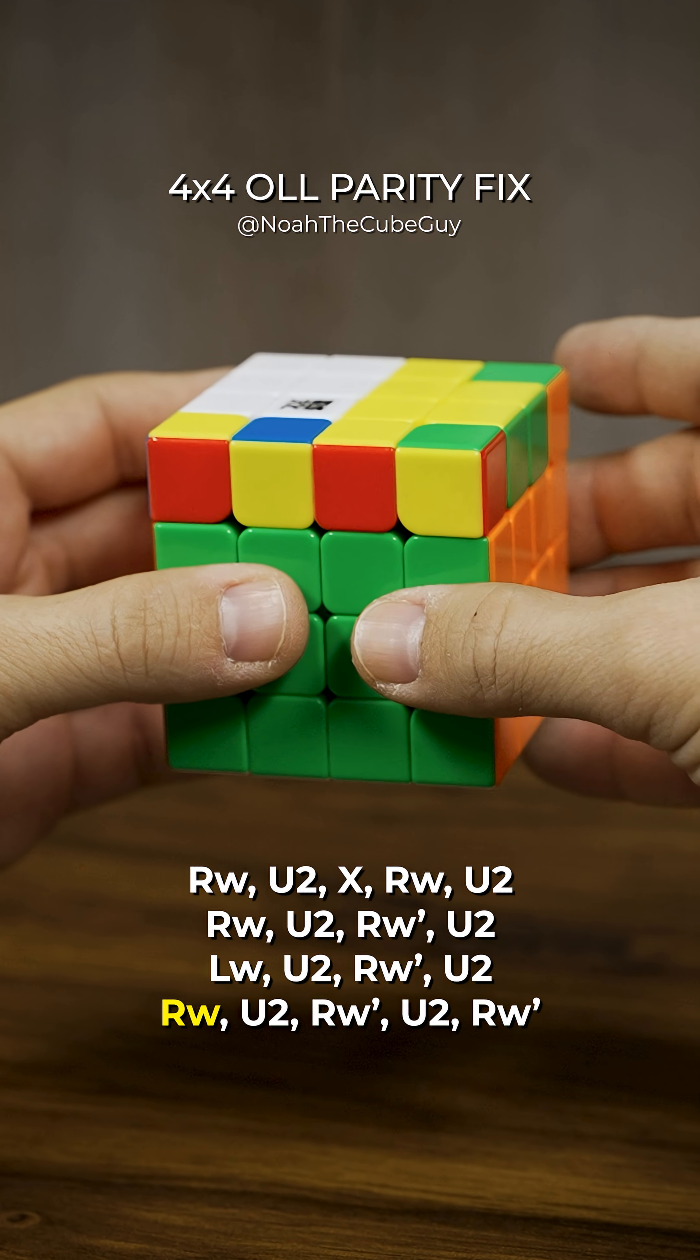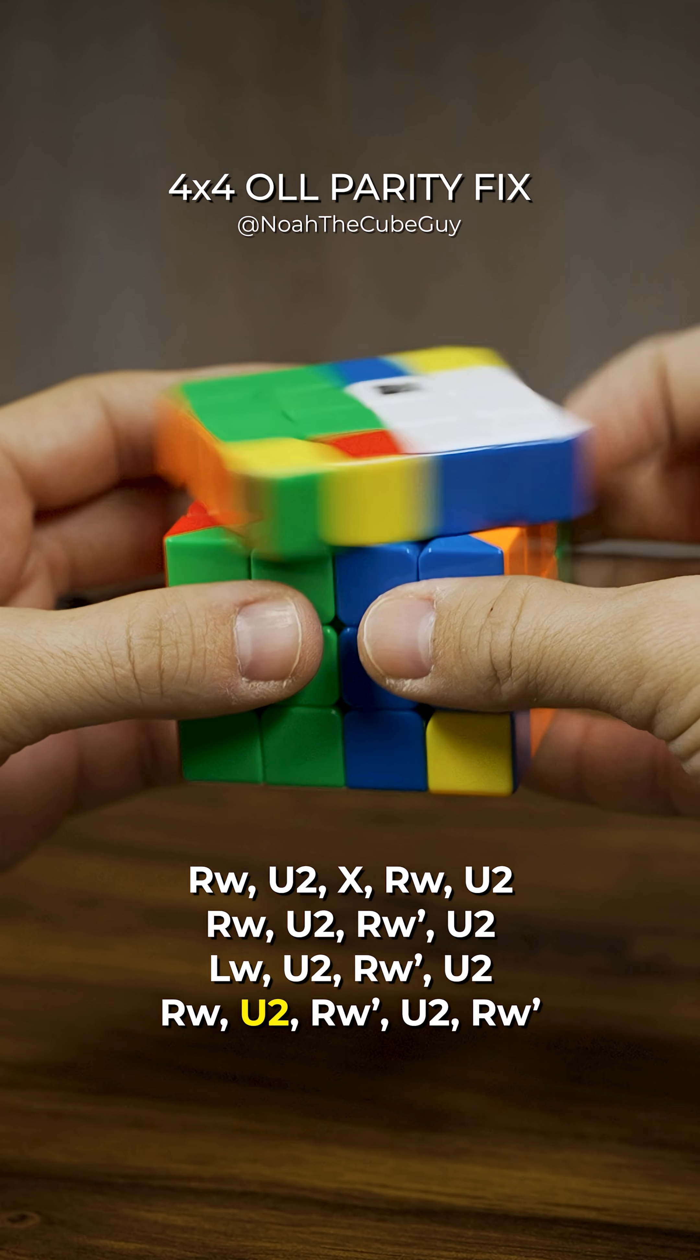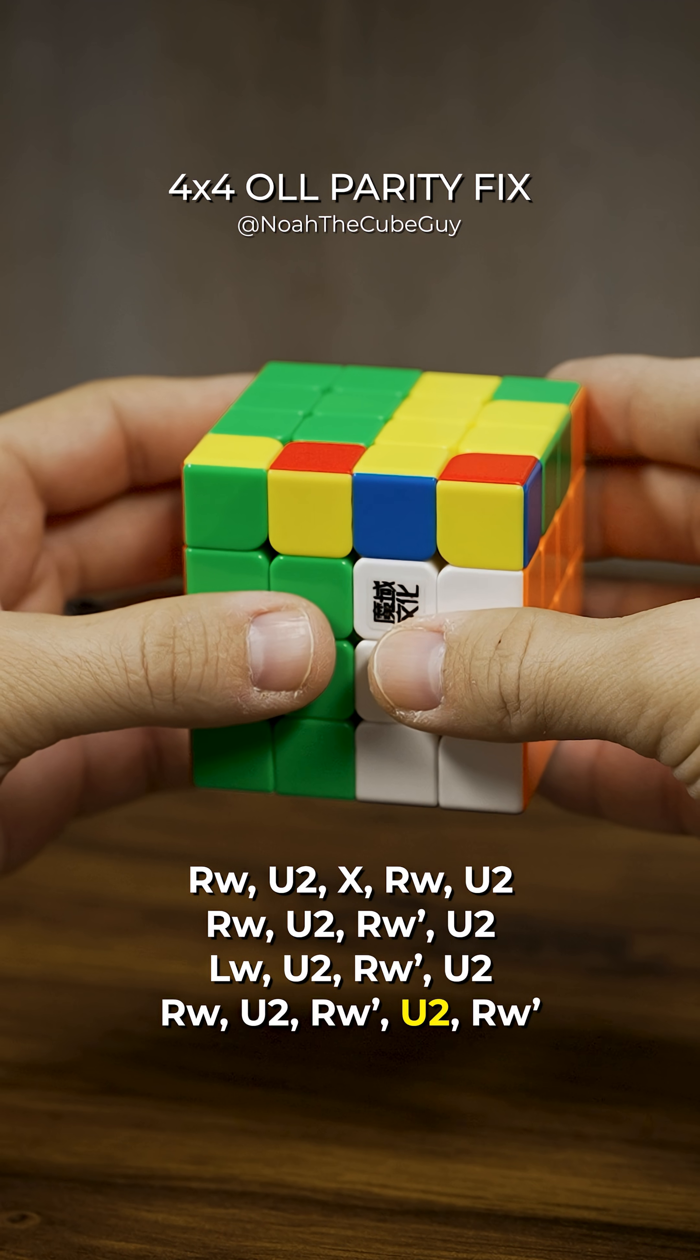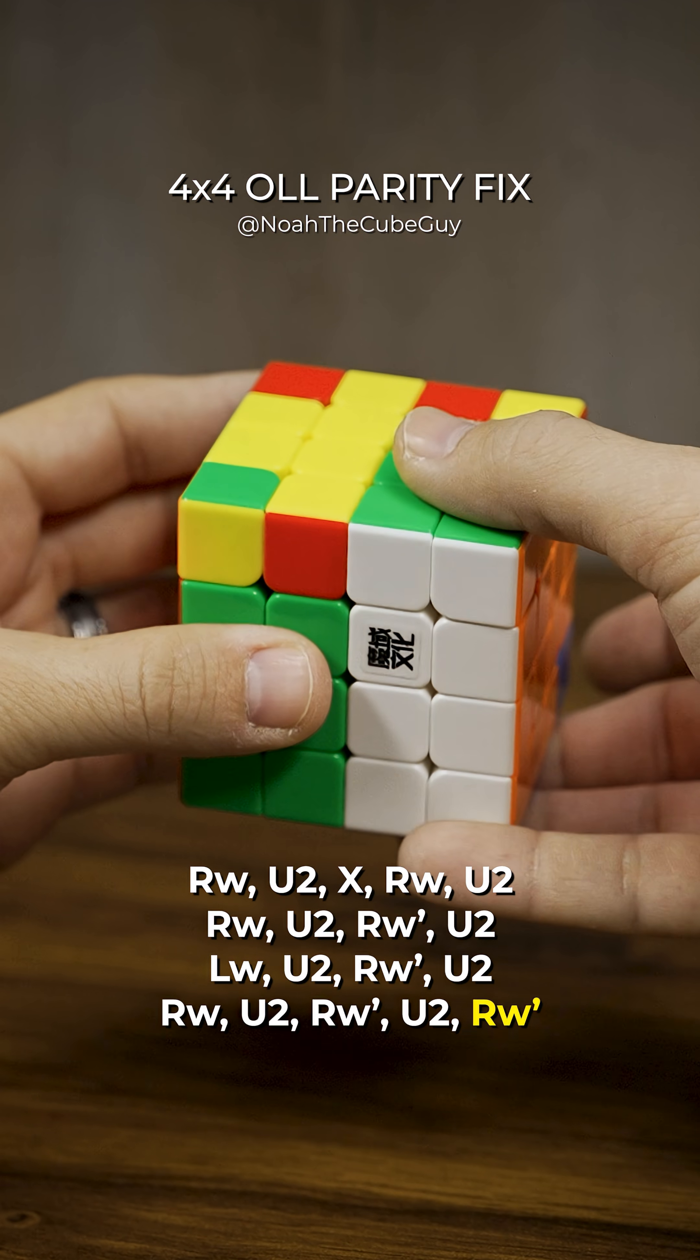The two right layers clockwise, up two times. The two right layers go prime, up two times. And then the two right layers go prime.